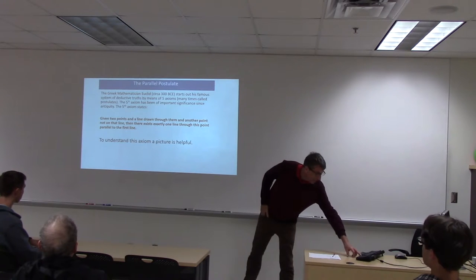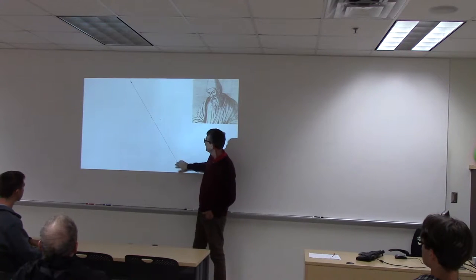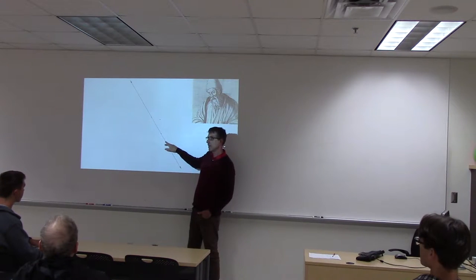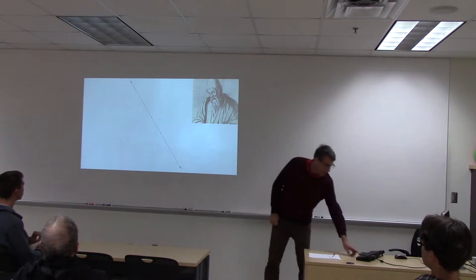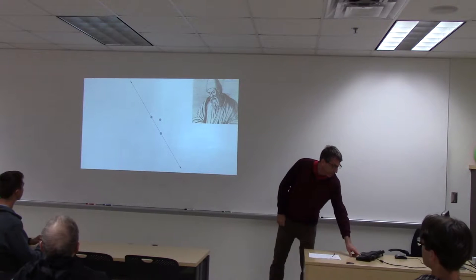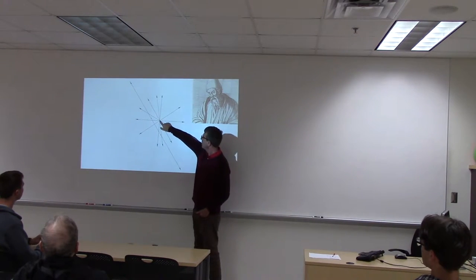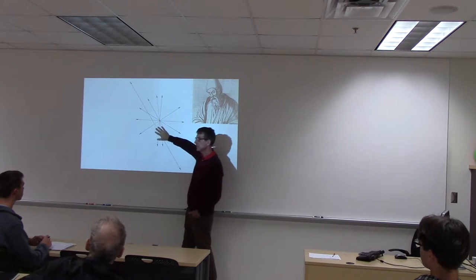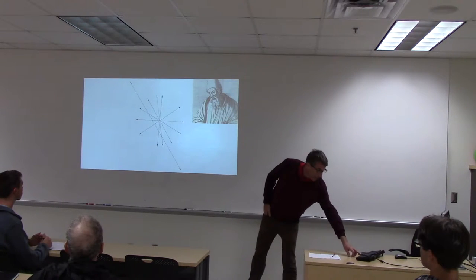So let's look at the picture. You can see it. Here's my line. Two points determine the unique line. So here's the third point that's not on that line. Look at all of the different lines that we can draw through this point. There's actually an infinite number of them. His axiom states that there is exactly one that is parallel to this one. And indeed, it's this one right here that's parallel to it.